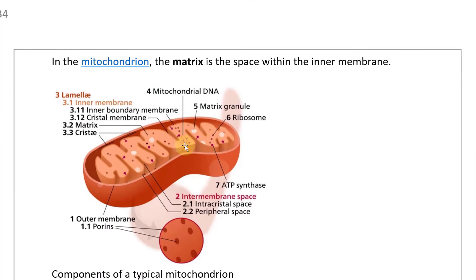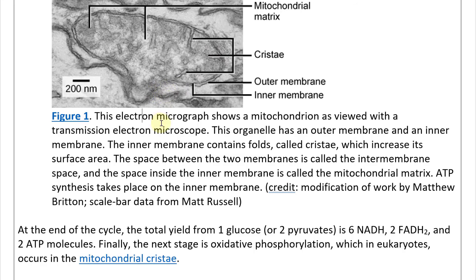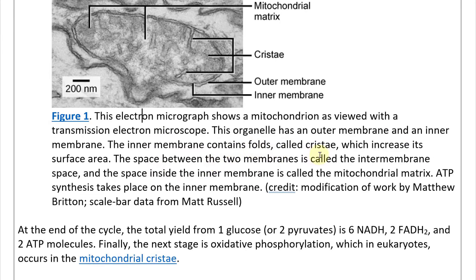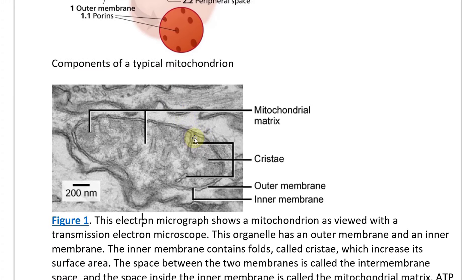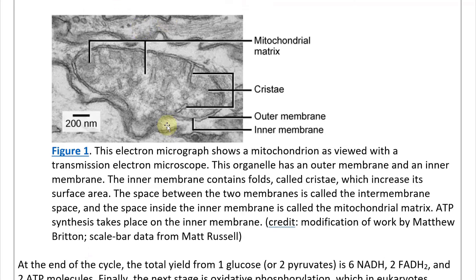Here is an electron microscope image of a mitochondrion as viewed with a transmission electron microscope. This organelle has an outer membrane and an inner membrane. The inner membrane contains folds called cristae. Notably, the mitochondrion has its own genome — mitochondrial DNA — and some ribosomes inside. The scale bar is 200 nanometers, which is a billionth of a meter — absolutely tiny. ATP synthesis takes place on the inner membrane, which is quite interesting.